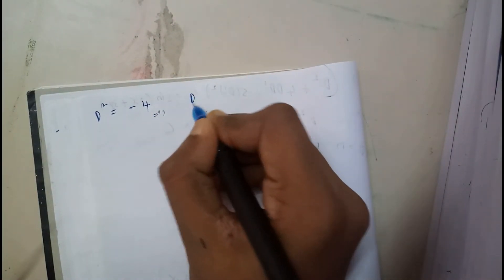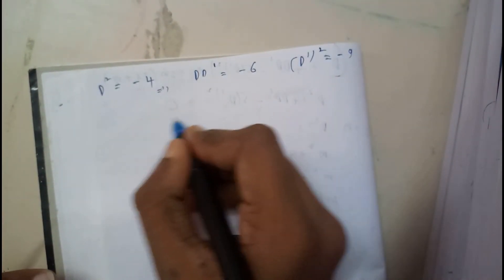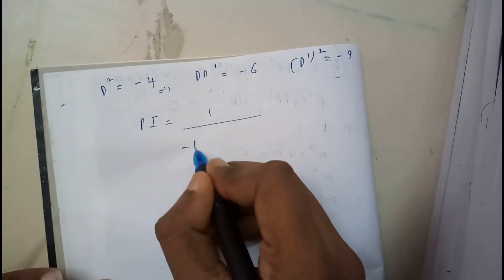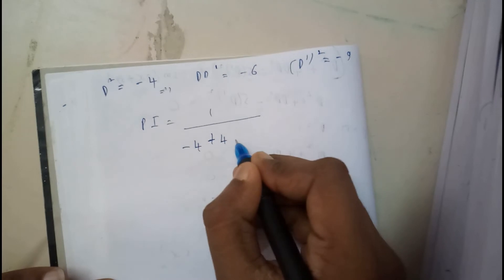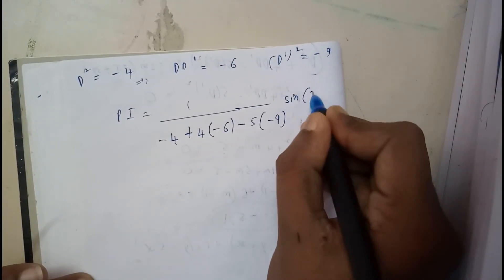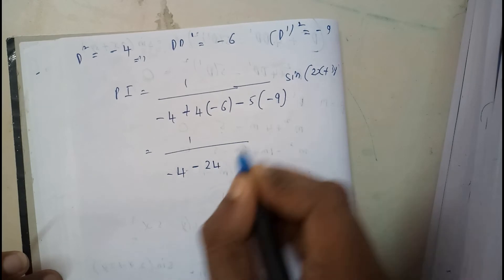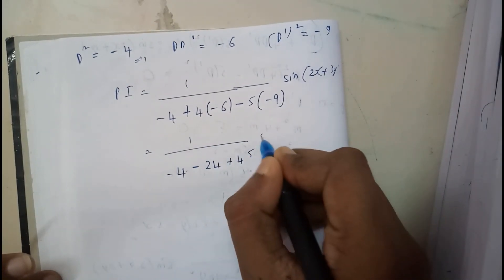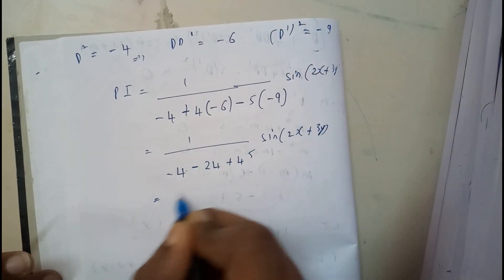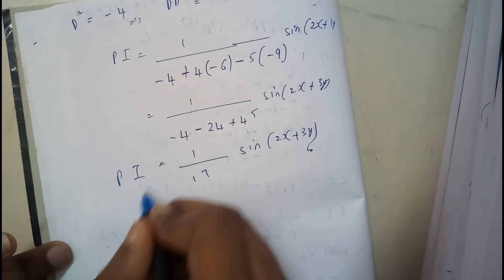Writing the solution cleanly: D² = −4, DD' = −6, D'² = −9. The particular integral is 1/(−4 + 4×(−6) − 5×(−9)) into sin(2x + 3y), which equals 1/(−4 − 24 + 45) into sin(2x + 3y) = (1/17) sin(2x + 3y).